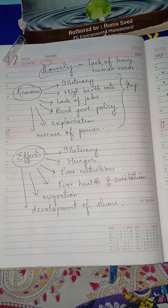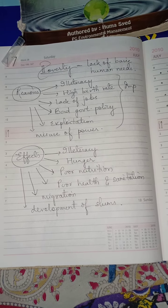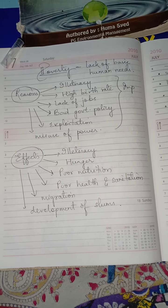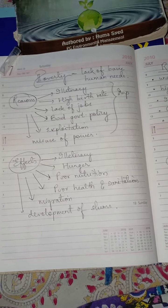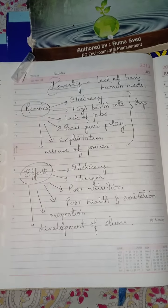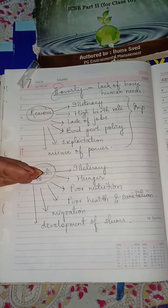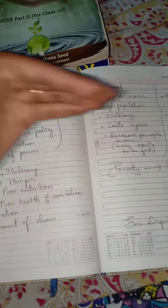Poverty means the lack of basic capacity to afford something which is highly necessary — it may be shelter, clothing, education, proper health care, or sanitation. We will study what are the reasons, what are the effects, and what are the classifications based on poverty.